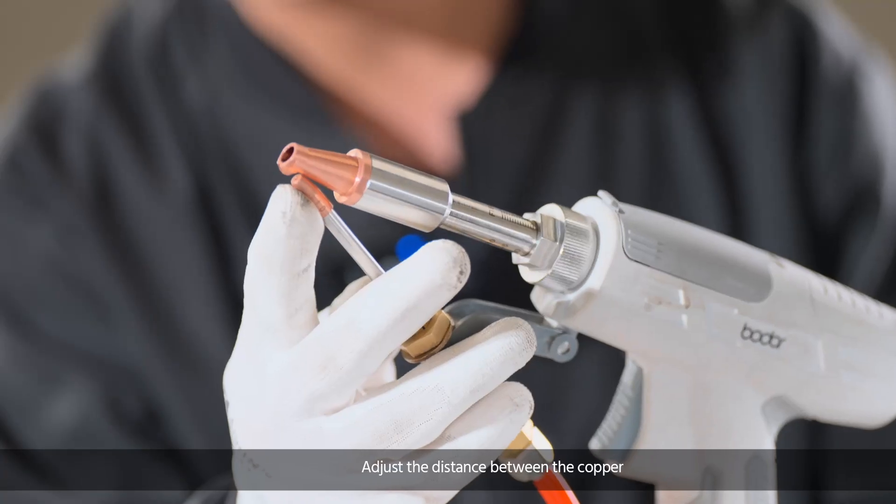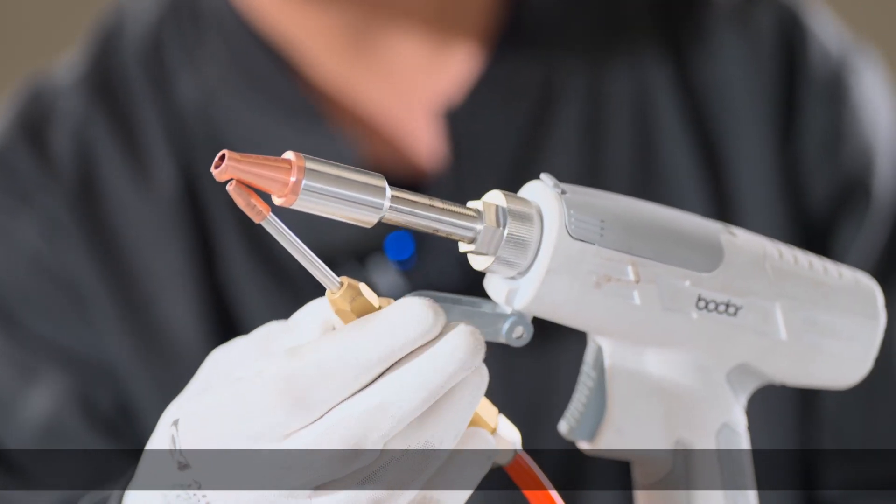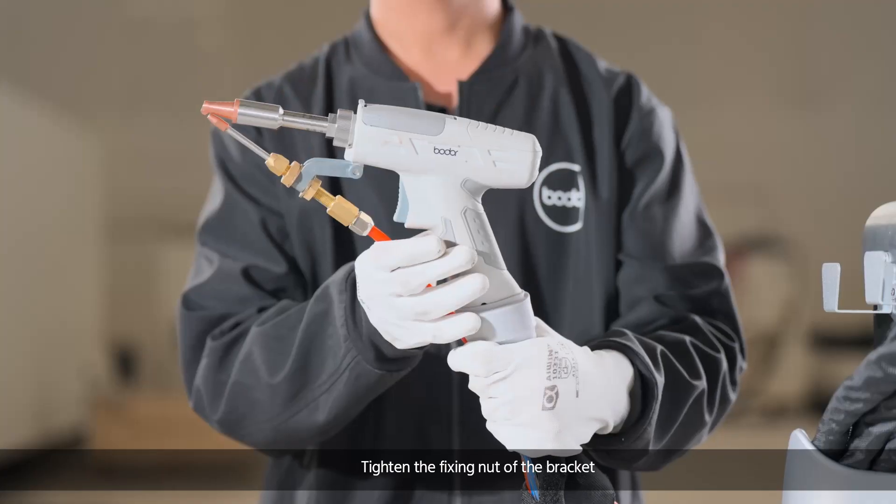Refix the bracket. Adjust the distance between the copper nozzle and the welding nozzle to one to two millimeters. Tighten the fixing nut of the bracket.